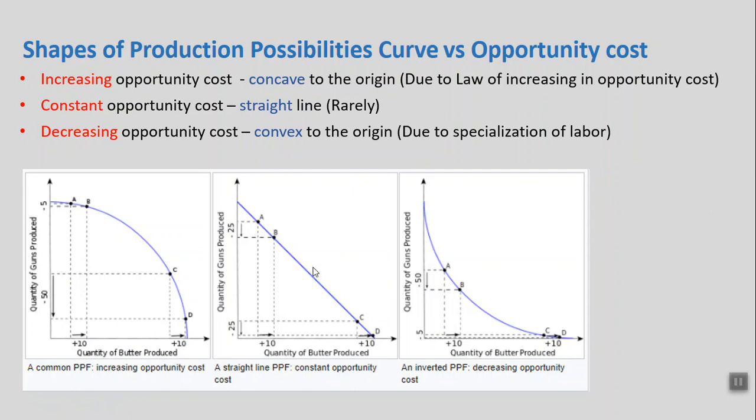The second shape is a straight line. This is rarely possible, but it occurs when you have similar kinds of goods. For example, on one side you are producing apples and on the other side grapes. When you move resources from apples to grapes, because the nature of the goods is similar, resources are equally efficient and equally qualified to produce grapes. That's why the shape is a straight line.